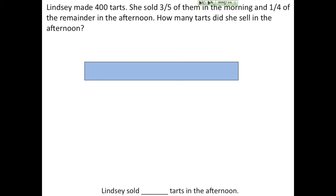My next sentence says she sold three-fifths of them in the morning. So I'm breaking the bar up into five parts. Whoops, I need to have it all labeled 400. I broke my bar up into five parts and I'm going to label three of those units M for morning. She sold those in the morning.